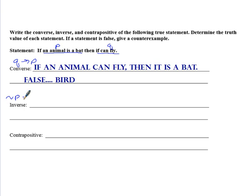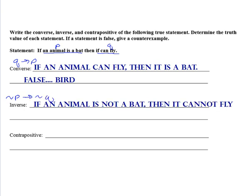Inverse. Inverse is when we negate. So what would that look like? If an animal is not a bat, then it cannot fly. Well, again, that's false. If an animal is not a bat, then it cannot fly. That's saying a bird. A bird is not a bat, but a bird can fly.